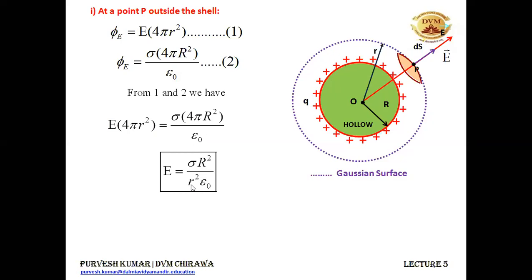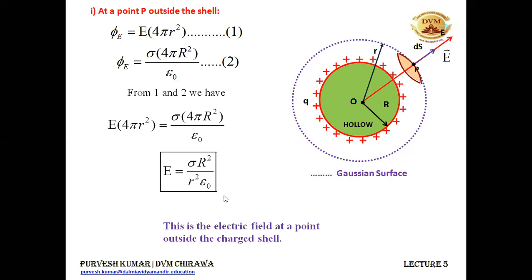Capital R is the radius of the thin spherical shell and small r is the distance of point P at which we need to find the electric field. This is the electric field at a point outside the charged shell: E equals sigma R squared upon (r squared epsilon naught).